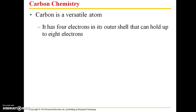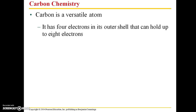Carbon is a really versatile atom. It has four electrons in its outer shell, which can hold up to eight electrons, so there are potentially four sites where carbon can interact with other atoms. It can share its electrons with other atoms to form up to four covalent bonds.